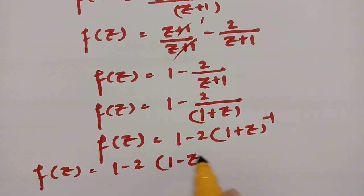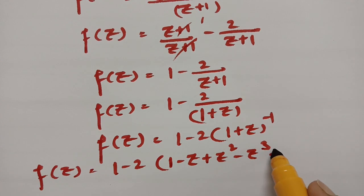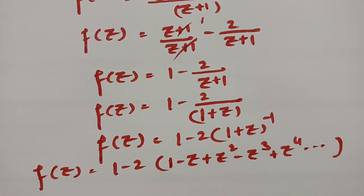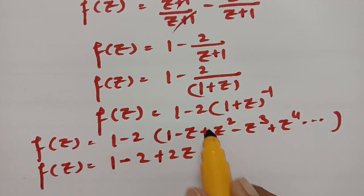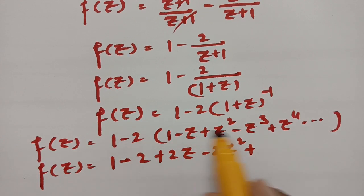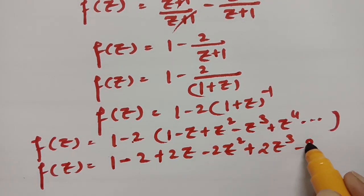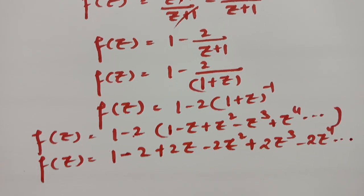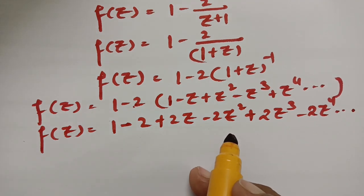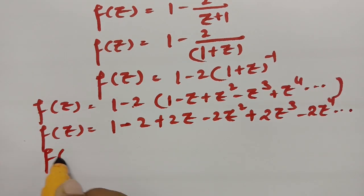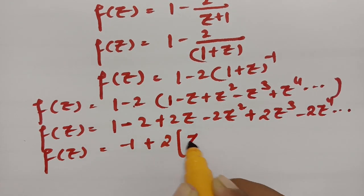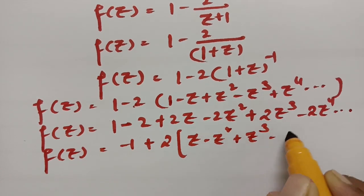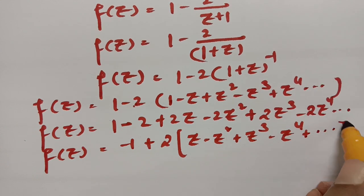Alternate plus and minus: 1 minus z plus z² minus z³ plus z⁴ and so on. Now if I multiply with minus 2, this is 1 minus 2, minus of minus plus 2z, and this is minus 2z², plus 2z³, minus 2z⁴ and so on. Now 1 minus 2 is nothing but minus 1. So f(z) = minus 1, and if I take 2 common, this will be z minus z² plus z³ minus z⁴ plus and so on.